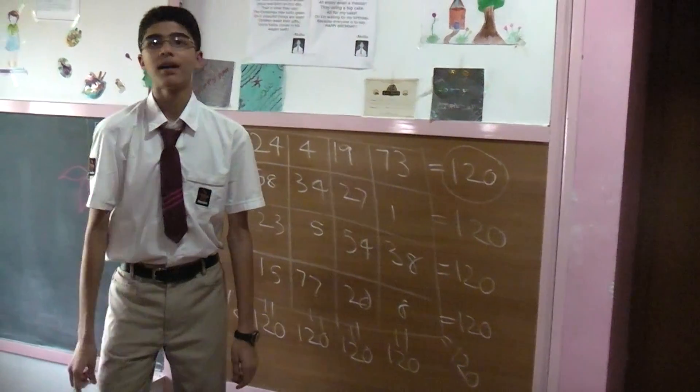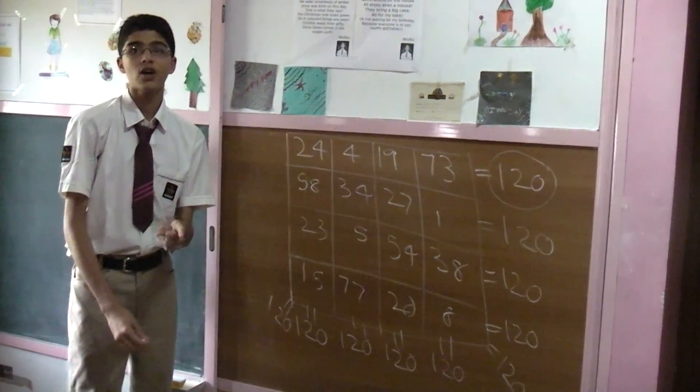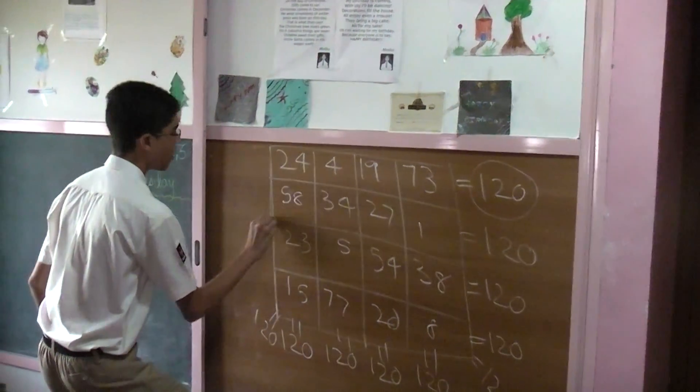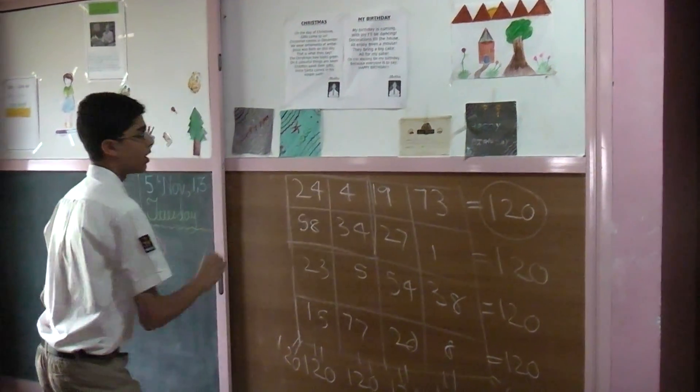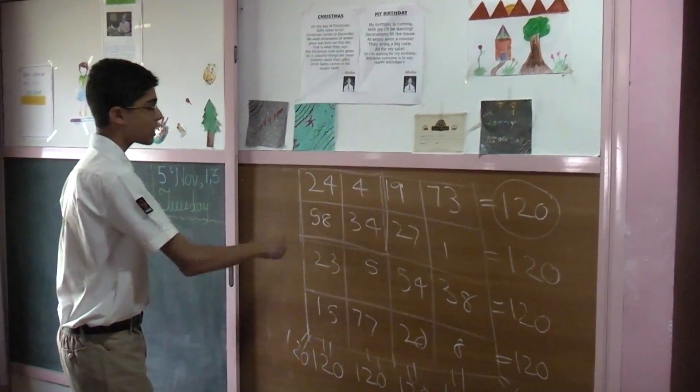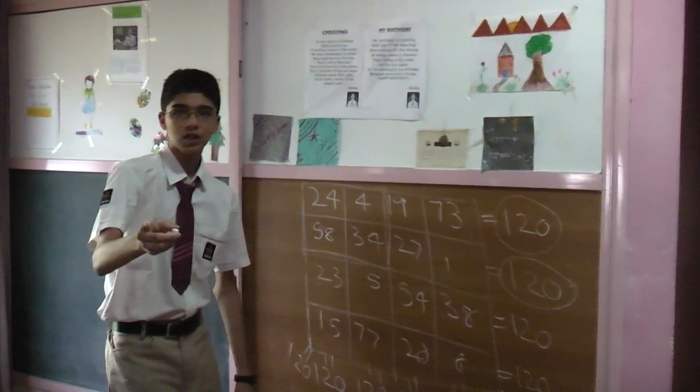But, did I stop there? No. Tendulkar also holds the record for playing the most number of test matches. You add these four numbers here. You get 24 plus 4 is 28, 28 plus 34 is 62, plus 58 is also 120.